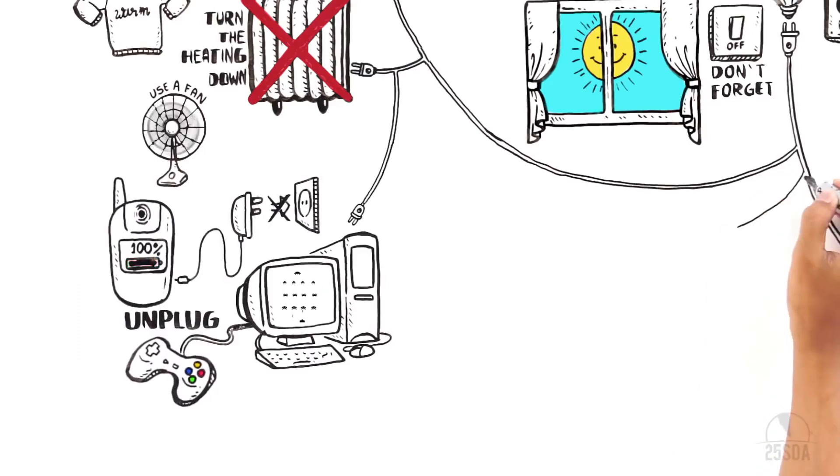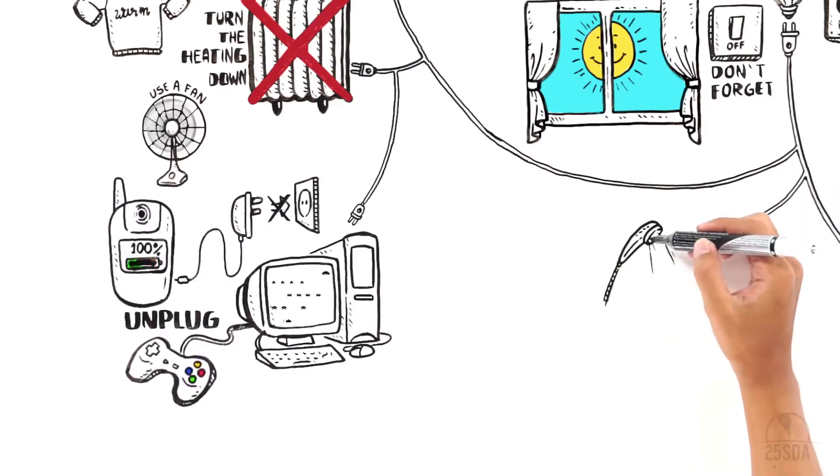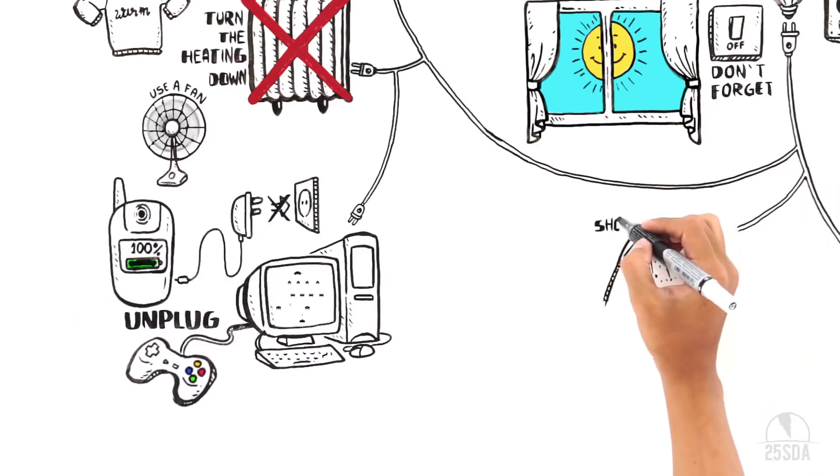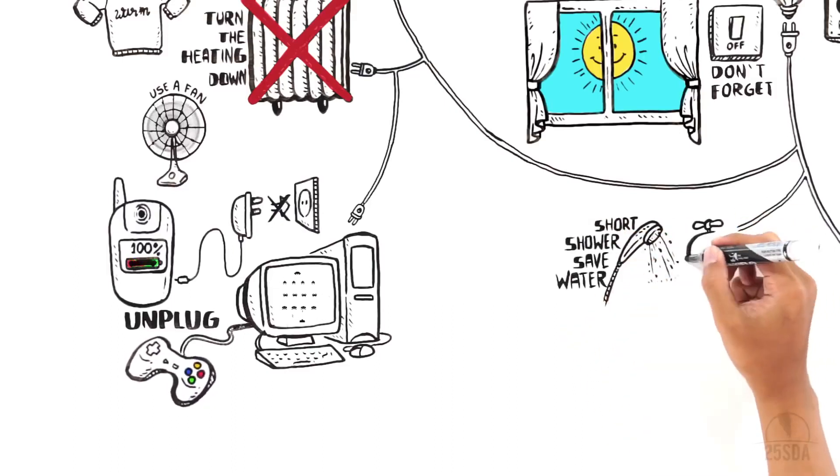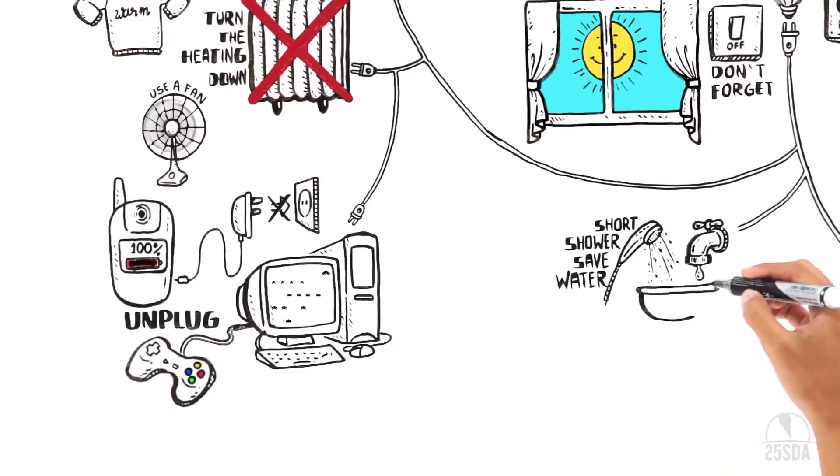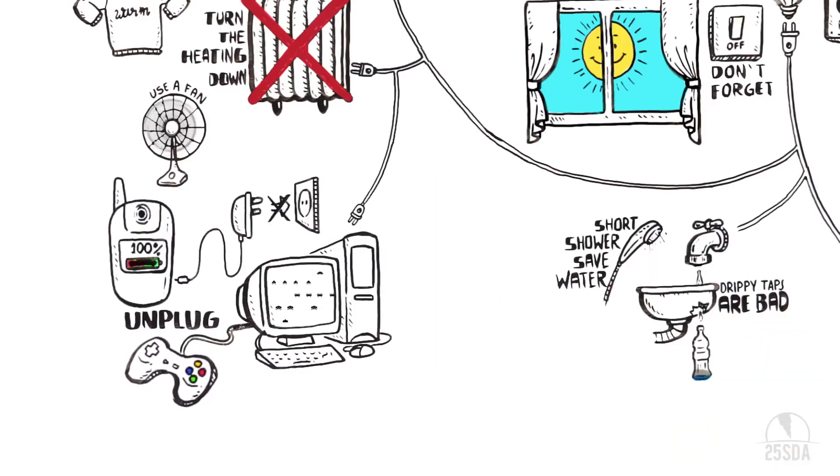Water is precious. Energy is needed to clean it. So how about saving a little? Instead of taking a bath, take shorter showers. Try not to keep the water running while you're brushing your teeth. Drippy taps waste a lot of water. Just think, a leaking tap wastes enough water to fill a soda bottle every 30 minutes.